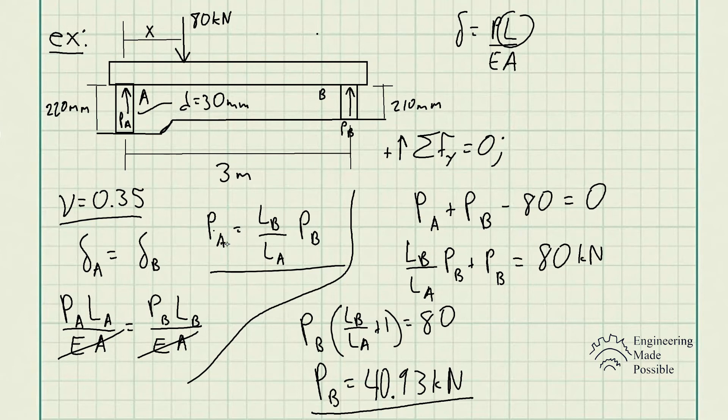Since we have P_B, we could easily solve for P_A just using the ratios of the lengths, right? The 210 millimeters divided by 220. And so we get for P_A, 39.07 kN. So right here, we're able to solve for how much force each of those cylinders are taking or the reactionary forces. And we see they are not equivalent.